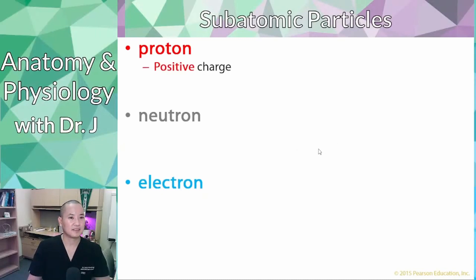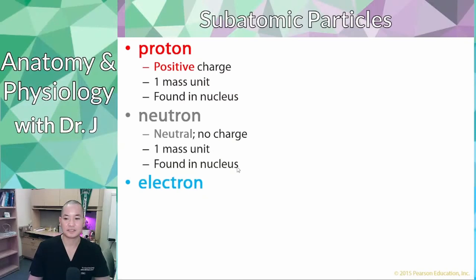So protons have a positive charge, a positive one charge, and their weight is one mass unit. And where do you find protons? You find them in the nucleus of an atom. Now neutrons, they are neutral. They don't have electrical charge, so they have zero charge. They're equal in weight to a proton, and they're also found in the nucleus.